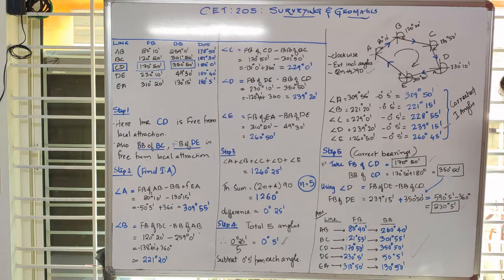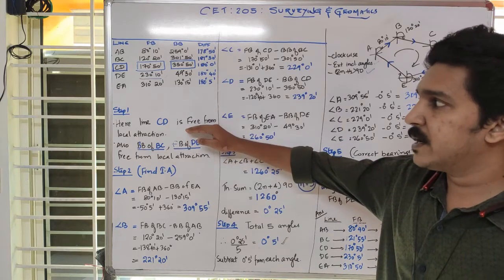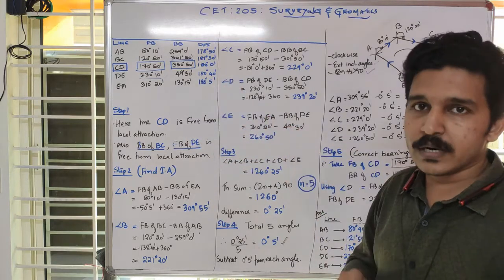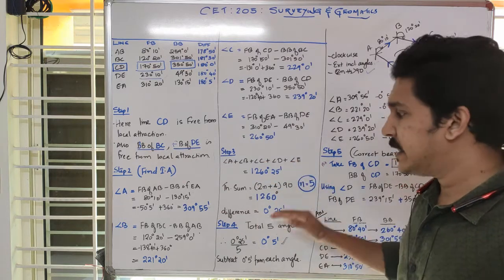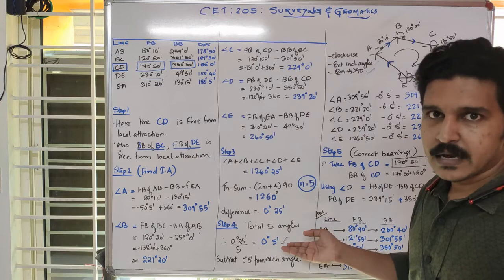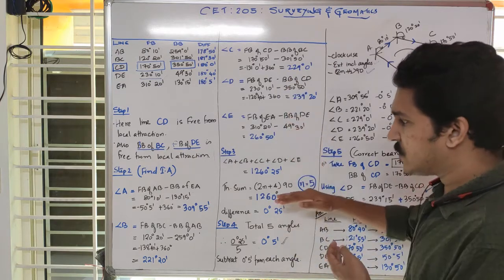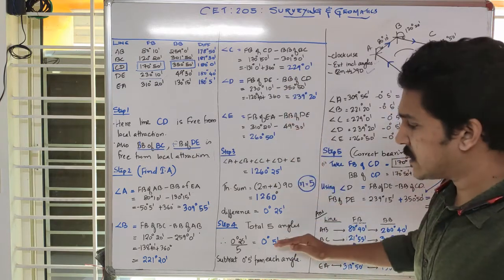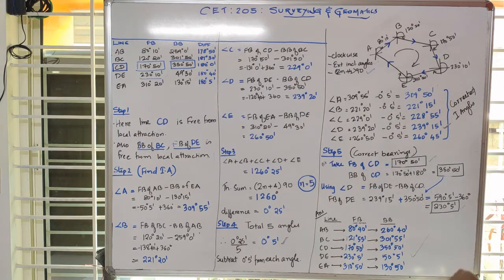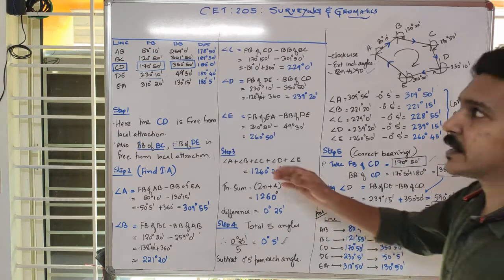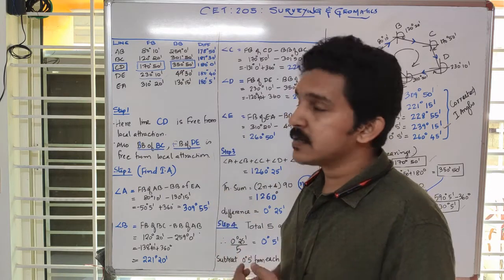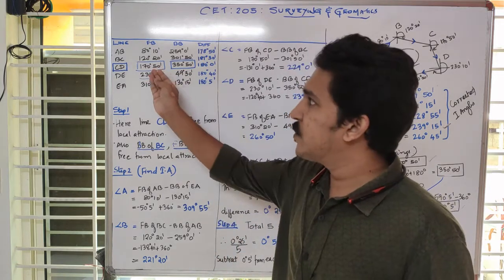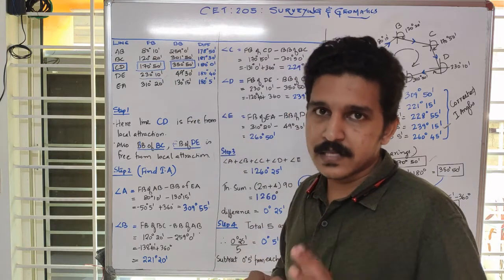Step 5: we find out all the corrected bearings. In summary, step 1 was finding which line is free from local attraction; step 2 was finding the exterior included angles; step 3 was checking those values; step 4 was correcting the angles by reducing 5 minutes from each. Now, the last step is step 5 — we have to correct all the bearings except for CD. The best method is to start with the forebearing of CD itself, which is 170 degrees 50 minutes.